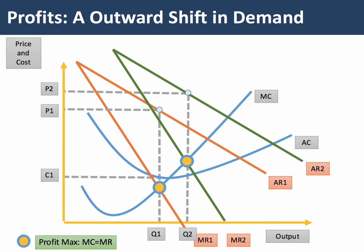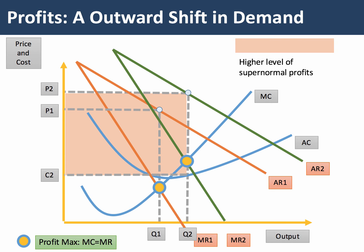Assuming we draw in the cost curve here, cost curve C2 is not really much different to C1, but C2 is shown as the cost at output Q2. So now the firm is producing Q2, it costs C2 per unit, they're charging P2 as the price, and the level of profit is much higher than before. This area, shaded orange, is the higher level of super normal profits after the outward shift of the revenue curves.